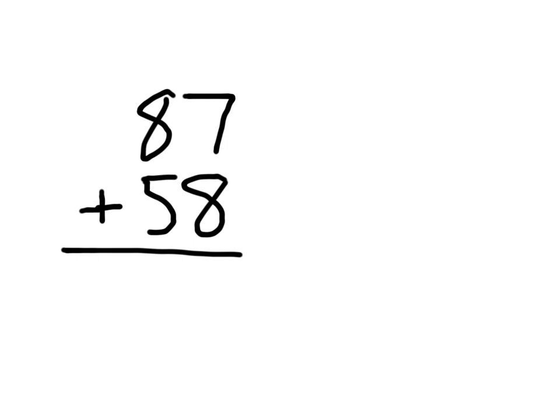If we look at these numbers, we've got 87 plus 58. Of course we could figure out an exact answer. 7 plus 8 would equal 15, regroup the 1, 1 plus 8 is 9, plus 5 is 14, so we have 87 plus 58 equaling 145.